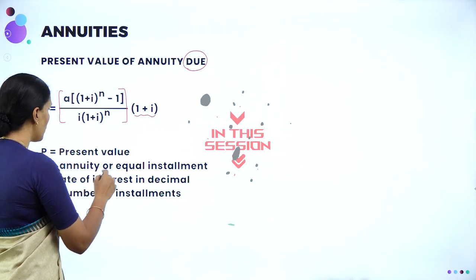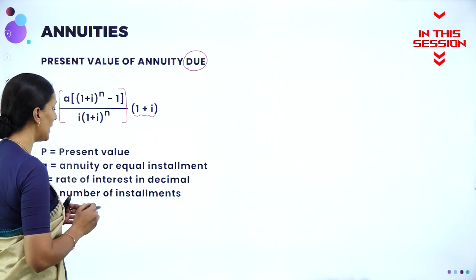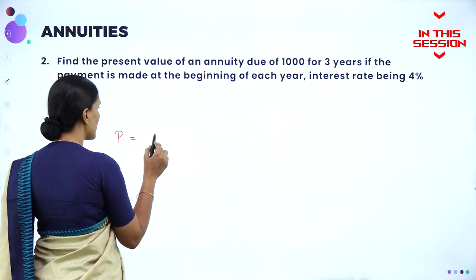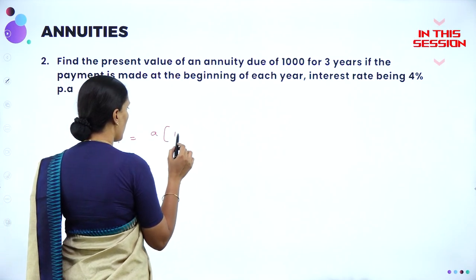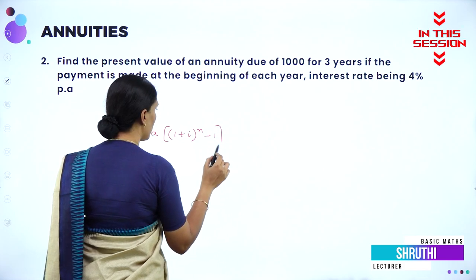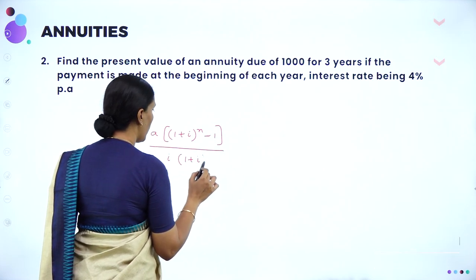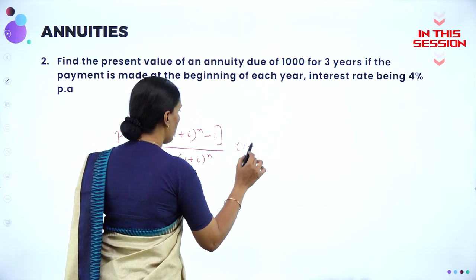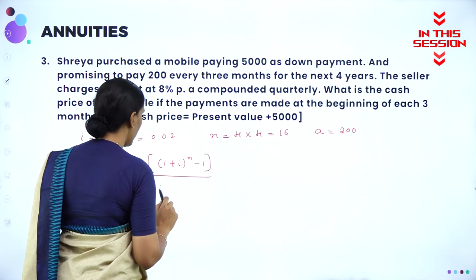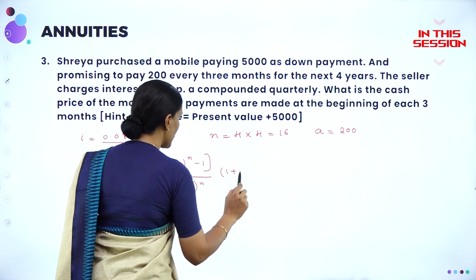P is present value, annuity or equal installment is A, I is the rate of interest in decimal, and N is the number of installments. Formula for present value is A into (1 plus I) whole to the power N minus 1, whole divided by I into (1 plus I) whole to the power N into (1 plus I).